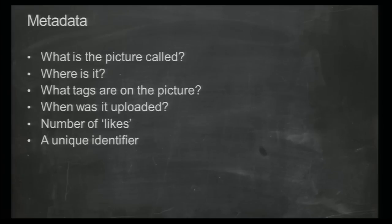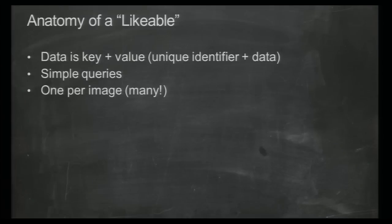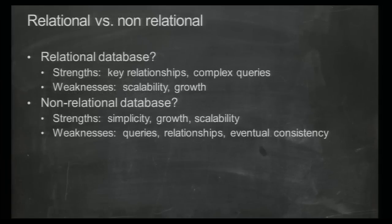The next part we need to store is the metadata: information associated with images — who uploaded it, when it happened, how many people have seen it, who's liked it, a title, tags, and a unique identifier for retrieval. We came up with an internal definition: we call that a 'likable.' A likable is a simple data structure — the unique identifier along with the information about it. Likables don't need to relate to each other. Queries are either get a single likable or get a list. Simple data structure.